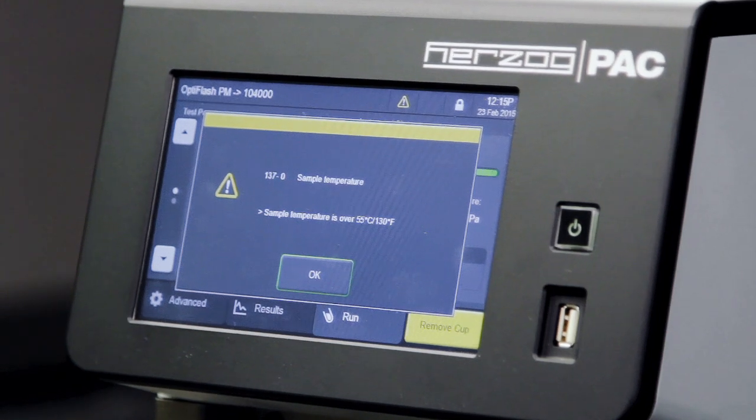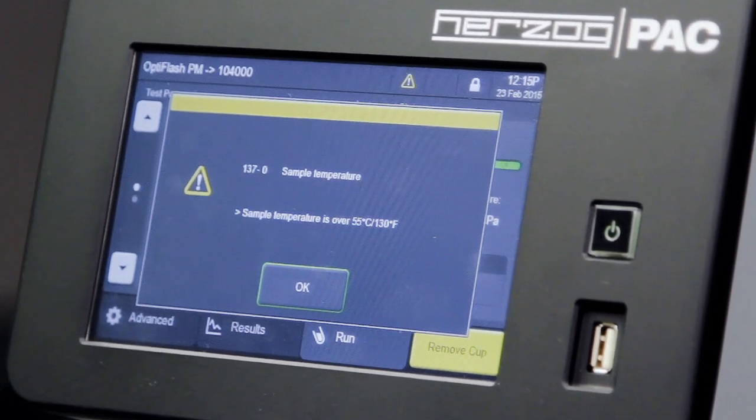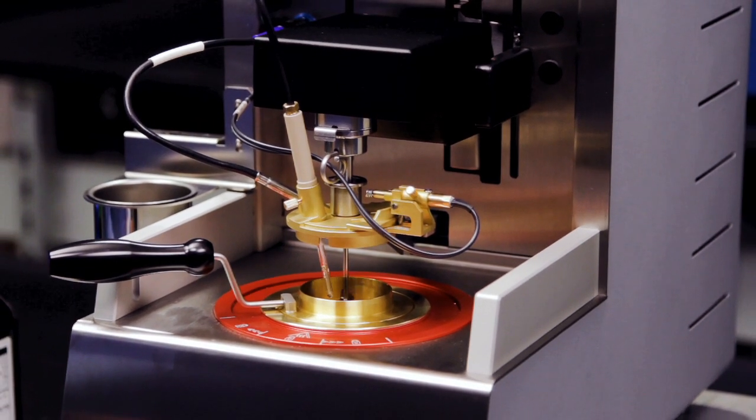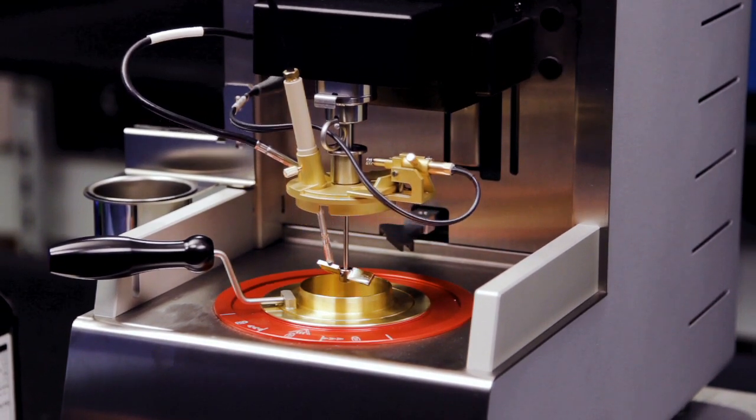A special procedure for high viscous samples keeps them at a standby temperature at the end of the test, which makes it easy to clean even the most difficult sample types, such as bitumen. The innovative design ensures that the sample does not drip from the stirrer into the heater block due to the tilt angle of the arm.